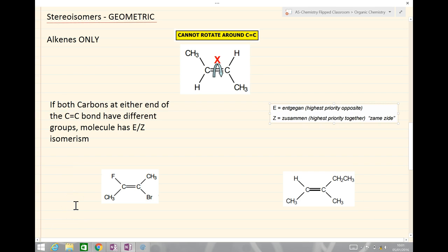So we're going to look at these stereoisomers, and importantly, as I said before, we're going to look at geometric isomers only in the AS course. Geometric isomers occur, importantly, in alkenes only.